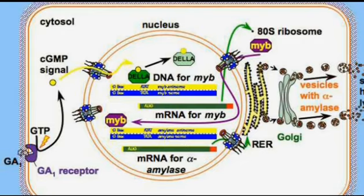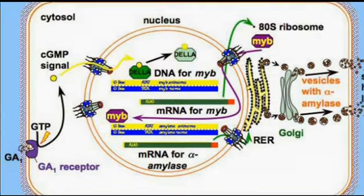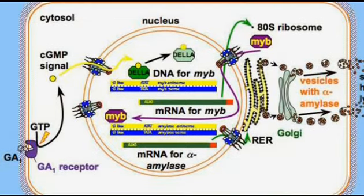The DELA domain repressor may be blocking the activity of transcriptional activators. The repressor is then degraded via the SCF ubiquitin ligase complex. The degradation of the repressor allows the expression of GA-MYB — that is, gibberellic acid MYB — and other early response genes.